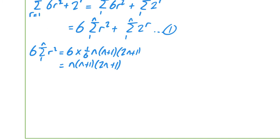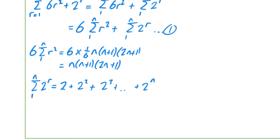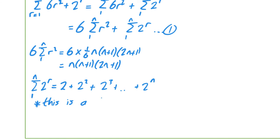For sigma from r=1 to n of 2^r, writing it out: 2¹ + 2² + ... + 2^n. Each term is obtained by multiplying by 2, so this is a geometric progression with first term a=2, common ratio r=2, and n terms.